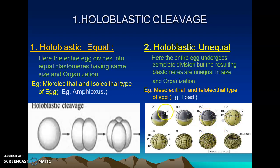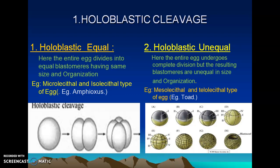In holoblastic unequal cleavage, the egg divides completely but some blastomeres are positioned at the animal hemisphere and some at the vegetal hemisphere. The blastomeres found on the animal hemisphere are very small in size, while the blastomeres produced at the vegetal hemisphere are larger in size. So unequal-sized blastomeres are produced at both the animal and vegetal poles. This type of cleavage is called holoblastic unequal cleavage.